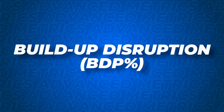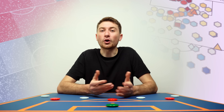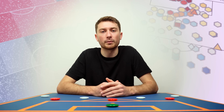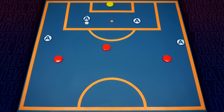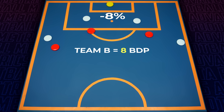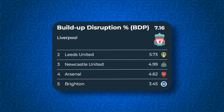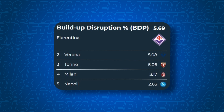The first is Build Up Disruption Percentage, or BDP. BDP quantifies the destructive effect of pressing on the opposition's pass completion rate by comparing it to their average. If a team is successful in their press, we'd expect the opposition to complete fewer passes than normal. For example, if Team A has an average pass completion rate of 86%, and the high-pressing Team B reduces this to 78% in a match, Team B achieved a BDP of 8. In the Premier League, Jurgen Klopp's Liverpool consistently dominate this chart — you can expect your pass completion to be 7.7% lower when playing against them. Fiorentina also score high in Serie A, given their aggressive man-to-man pressing approach.